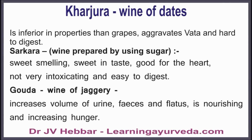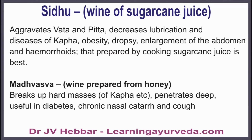Sharkara or wine prepared from sugar is sweet-smelling, sweet in taste, good for the heart, not very intoxicating, and easy to digest. Gouda, prepared from jaggery, increases volume of urine, feces, and flatulence, and is nourishing and increases hunger. Sidhu or wine prepared from sugarcane juice aggravates vata, decreases lubrication and diseases of kapha, obesity, dropsy, enlargement of the abdomen, and hemorrhoids.